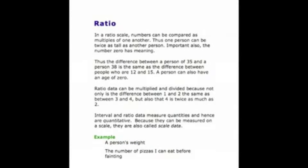The most powerful form of data are known as ratio data. This type of data makes sense to compare — they can be multiplied and divided. They have the groupings of nominal, the rank order of ordinal, and the equal spacing of interval, plus the added benefit that comparisons are meaningful. For instance, if someone paid $500 in tuition, they paid twice as much as someone who paid $250. Ratio data are the most useful and easiest to handle.